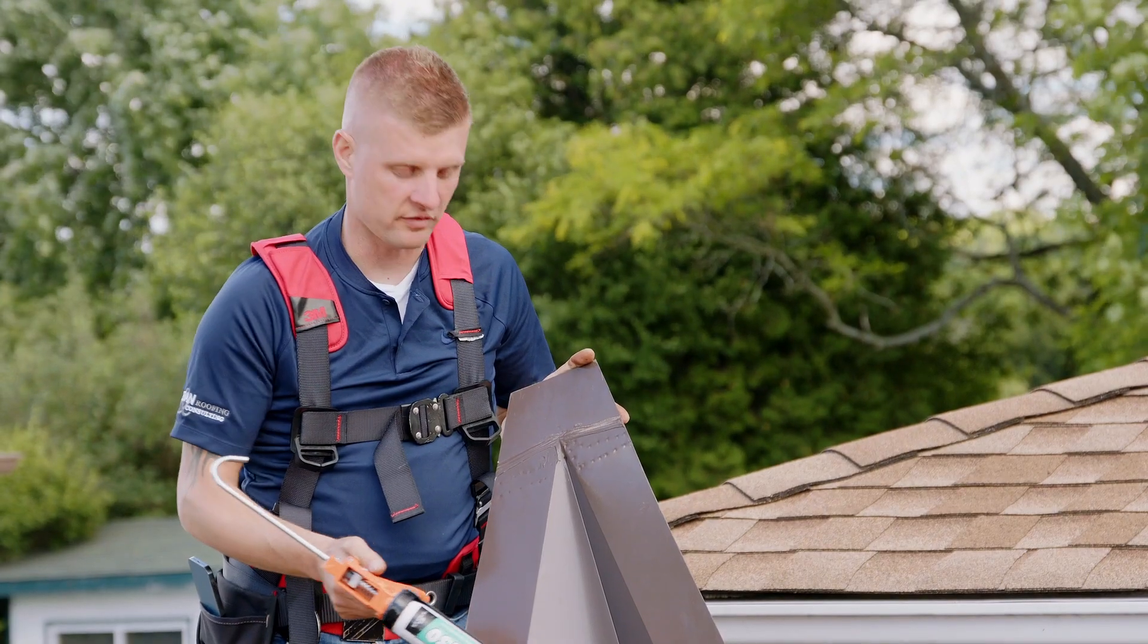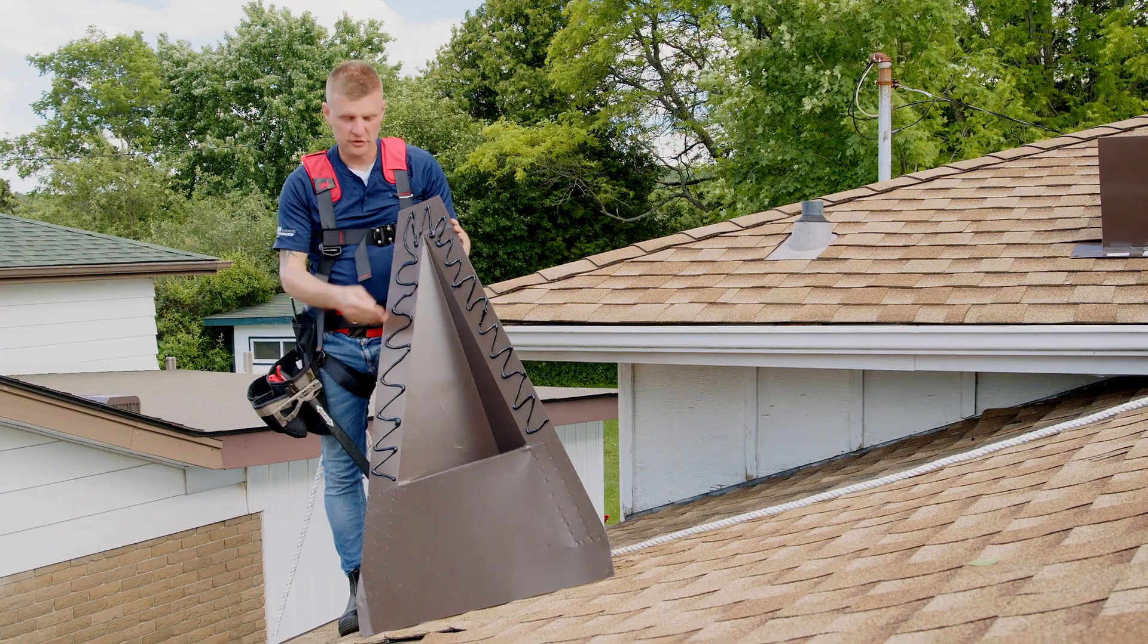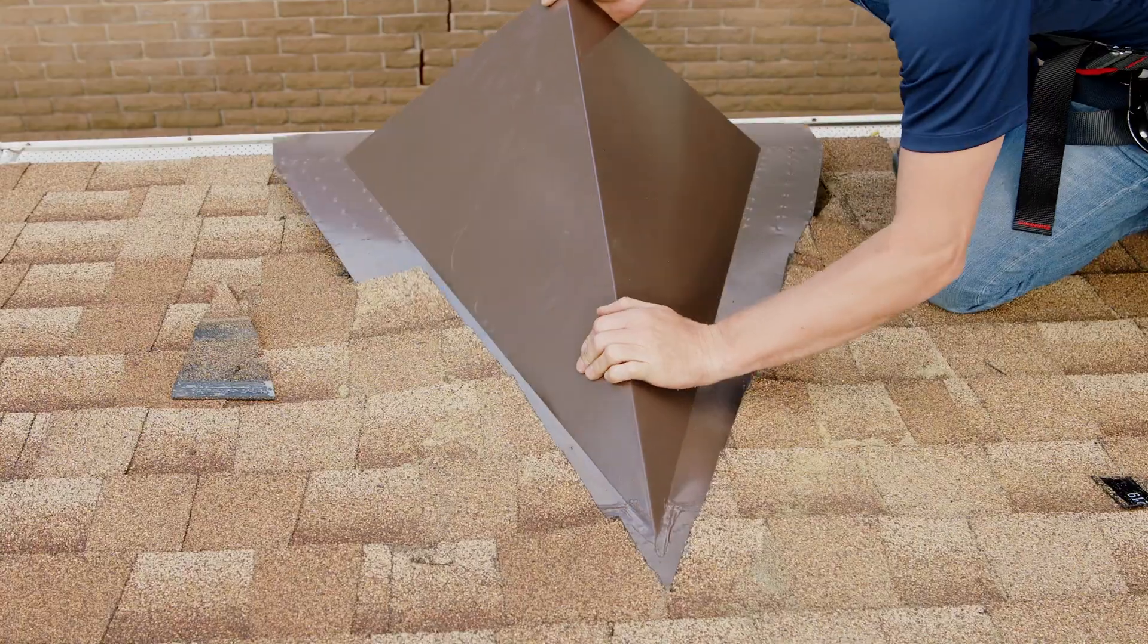Using a generous amount of roofing cement, cover the flashing on the underside of the vent. With your roofing cement applied, you're now ready to slide the vent into place.